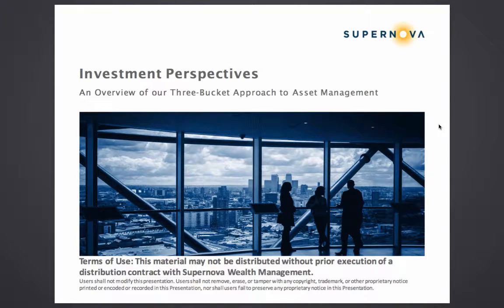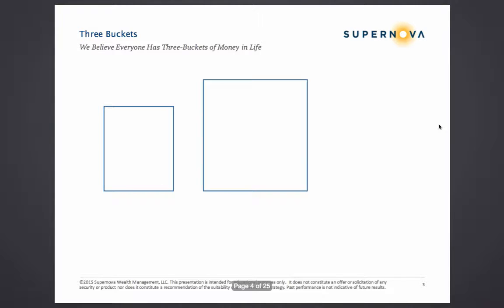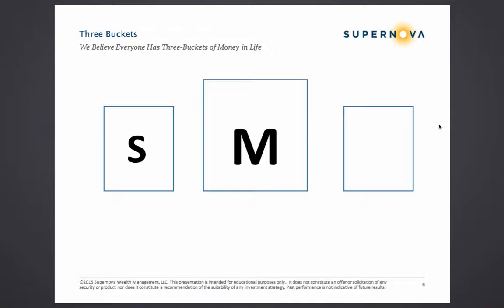Let's briefly review our three-bucket approach to asset management. We believe everyone has three buckets of money in life. When drawing this out, in the left-hand bucket we write an S for Sam, in the middle bucket we write an M for Michael, and in the right-hand bucket we write an A for Alexander.